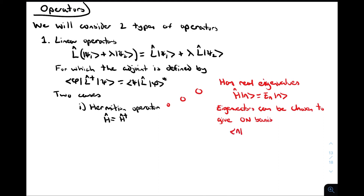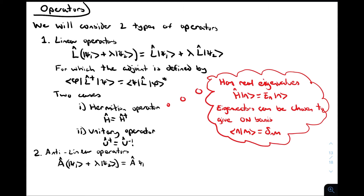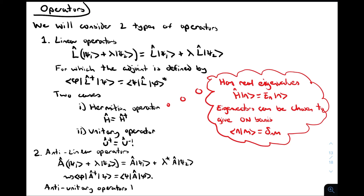Antilinear operators act almost the same as linear operators, except when acting on a linear combination of vectors, any scalars become complex conjugated. The definition of the adjoint is also slightly different from that of linear operators. If we defined it the same way as for linear operators, one side of an equation would be linear in a vector while the other would be antilinear. Anti-unitary operators, which have the same defining property that the adjoint equals the inverse, will also be important in quantum mechanics.